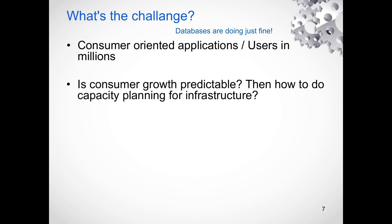Can consumers be predictable? Can you tell a user they're going to show up at 12 in the afternoon and stay on the system for 90 minutes? That's impossible. Given the fact that you can't predict consumer growth, how do you predict infrastructure growth? How do you predict how many infrastructure components will be necessary to service your customers if you really don't know when they will come or how long they will stay? Capacity planning becomes a serious challenge.